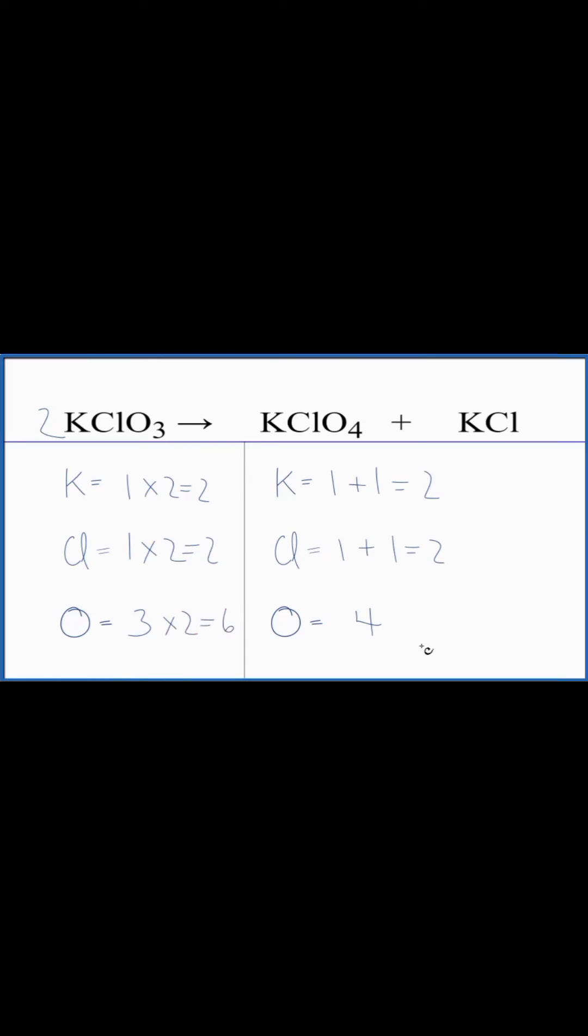Everything's balanced except the oxygen. And this is a bit of a problem here because if I put a two here, then I would have eight and six. That doesn't work. What I need to find is something that both of these numbers go into. Give me a whole number. It looks like twelve would work for that.